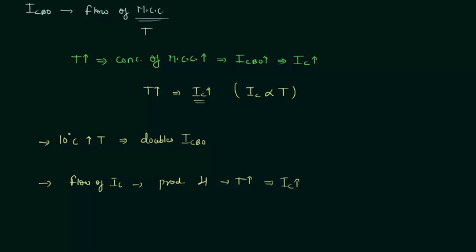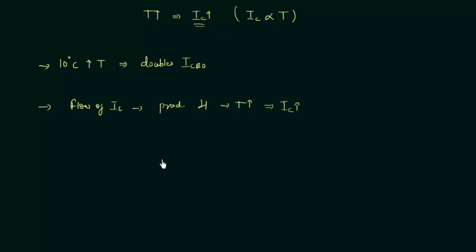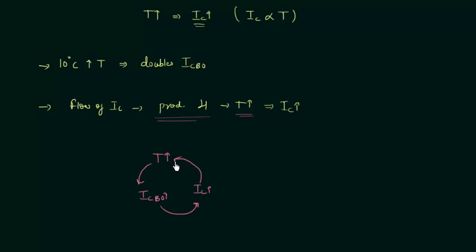There is a cyclic process: when temperature increases, it increases the reverse saturation current ICBO; when ICBO increases, it increases the collector current IC; when IC increases, it increases the heat; and when heat increases, temperature will again increase. This process repeats itself, and within a few seconds the collector current will be high enough to burn the transistor.